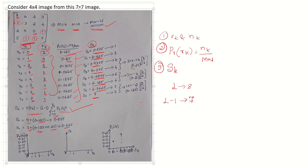Before the approximation step, we need to draw the required graphs. The first graph plots RK on the X-axis and PR(RK) on the Y-axis — this corresponds to the input image histogram. The second graph plots RK on the X-axis and SK on the Y-axis. Draw both graphs according to the calculated values.